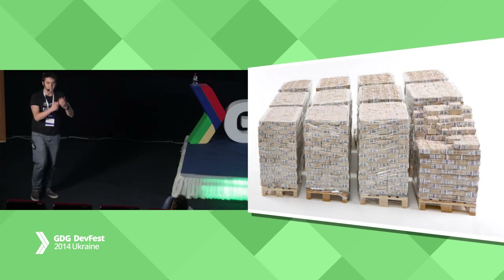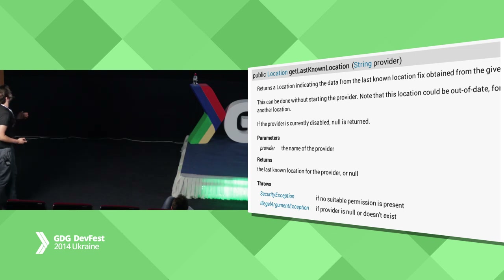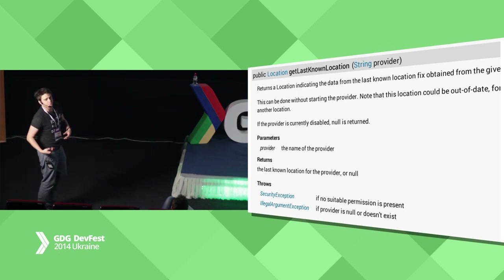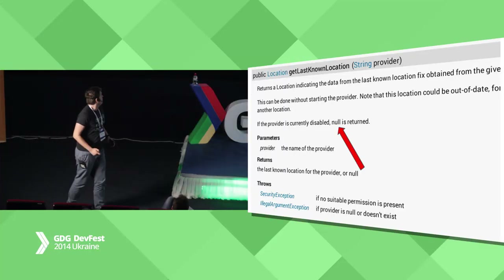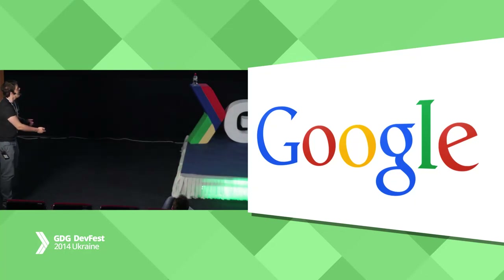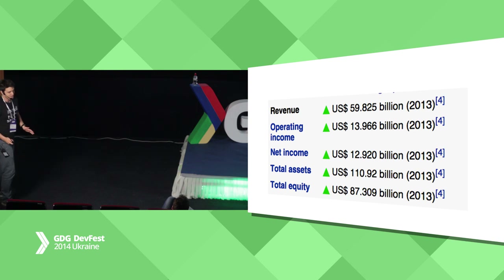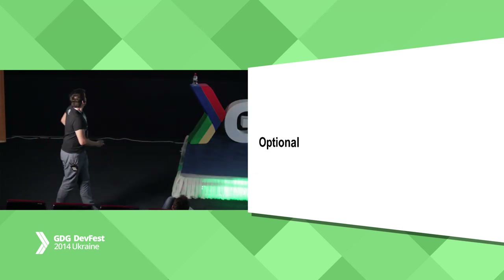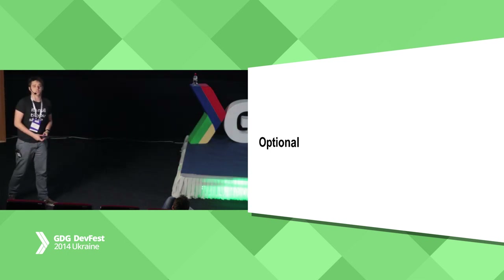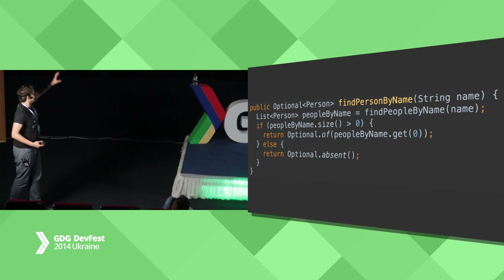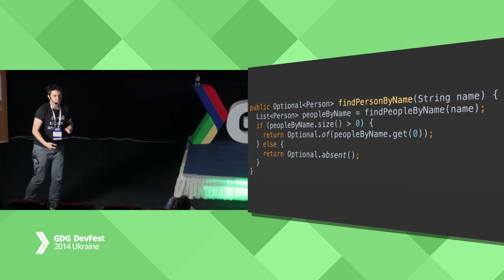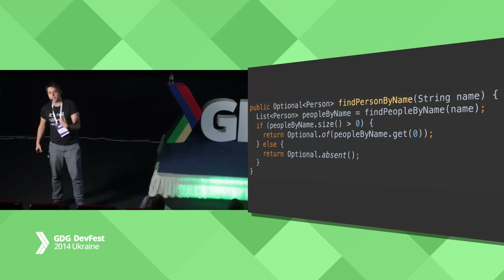And you can say, okay, but Google API and Google SDK for Android often return null in such situations. For example, the LocationManager — in the documentation there is a note that if the provider is currently disabled, null is returned. But this is Google, they can afford a one billion dollar mistake. We, as individual developers, probably cannot. So in Guava there is something called Optional. Optional can be used to make the signature of this method explicitly tell the caller that this method may return something or may return nothing.